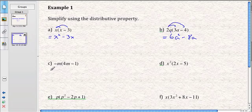The next one, if we multiply by negative m, that's a negative sign, just like a negative 1. So we don't usually write the 1 in. But we're going to multiply both terms inside the brackets by negative 1m. So negative 1 times negative 4, or sorry, negative 1 times 4 is negative 4. And m times m is m squared.